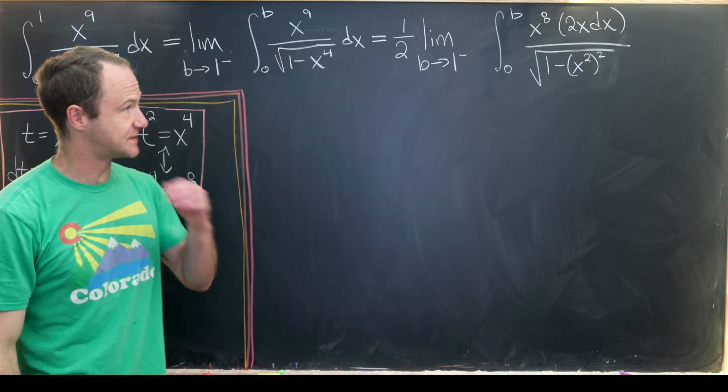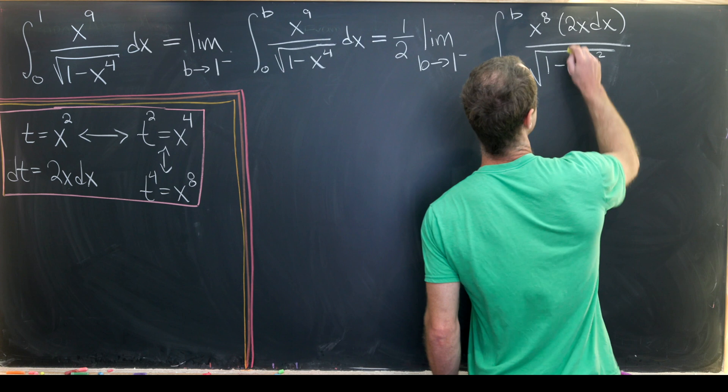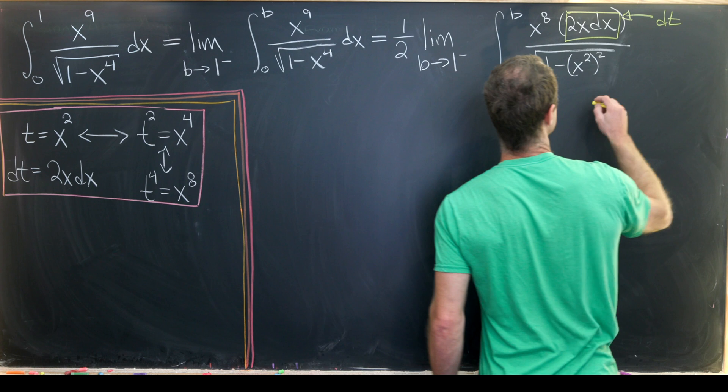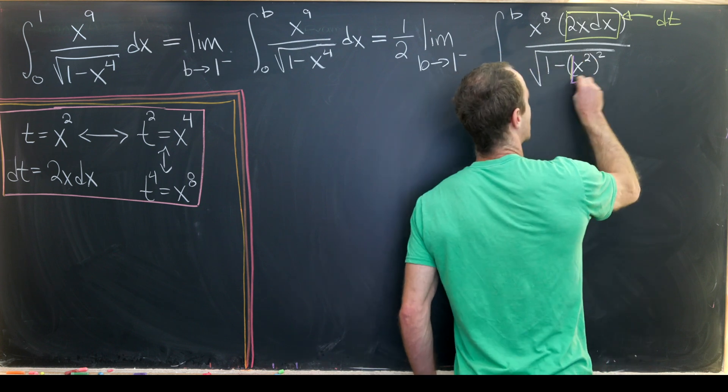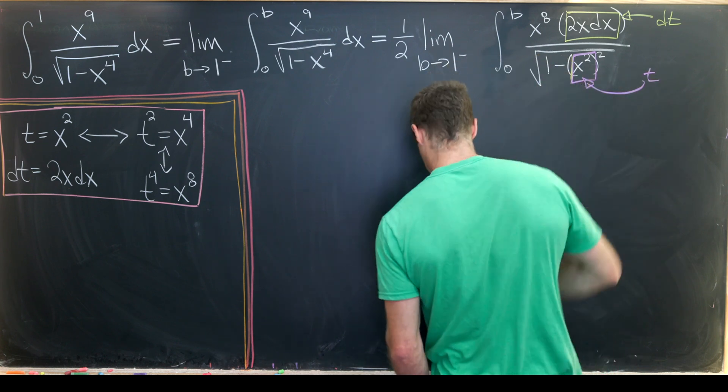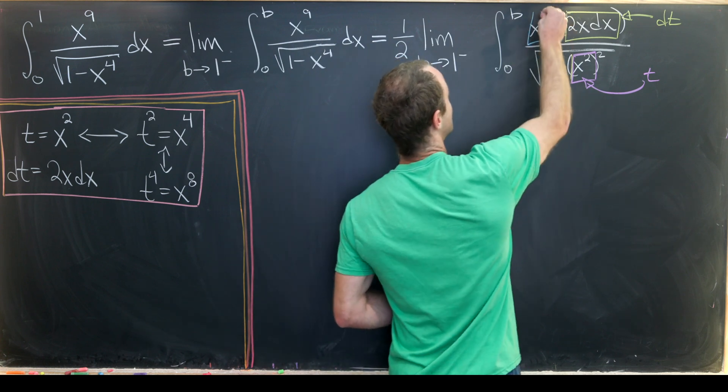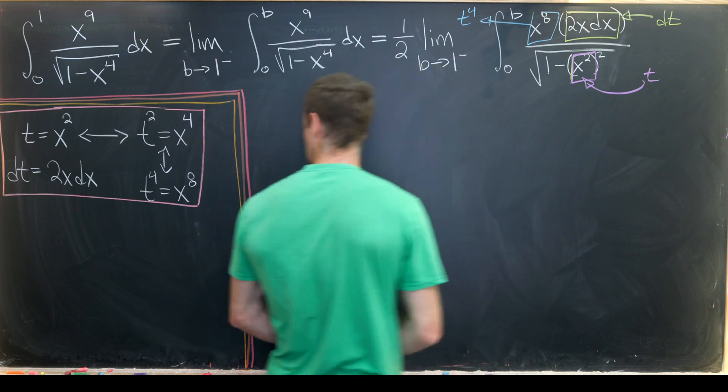Let's write this as x^8 times 2x dx all over sqrt(1 - x²)². Now we can make these substitutions. This term is dt, this is t, and this x^8 equals t^4.